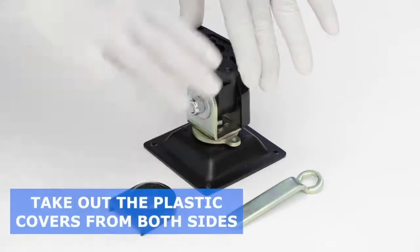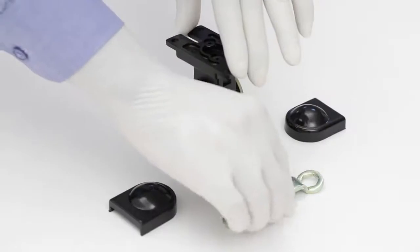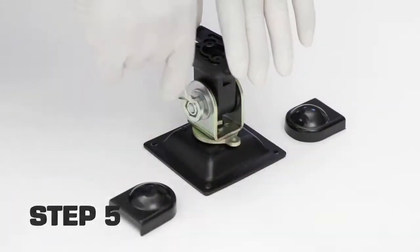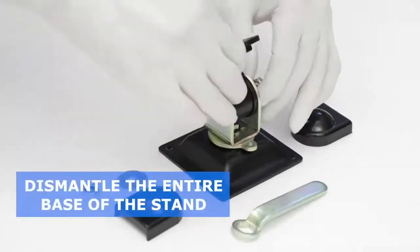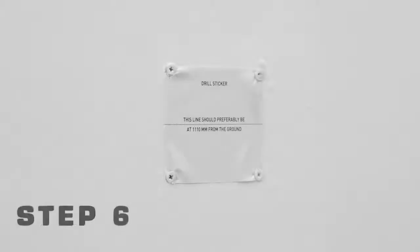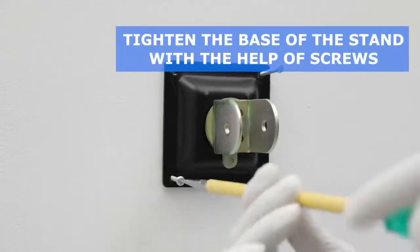Step 4: Take out the plastic covers from both sides of the base of the wall-mounted stand. Step 5: Open the nut using the spanner and dismantle the entire base of the stand. Step 6: Tighten the base of the stand with the help of screws.